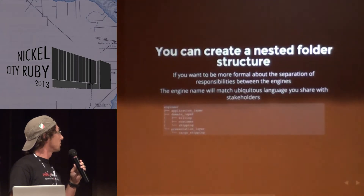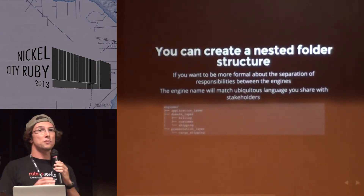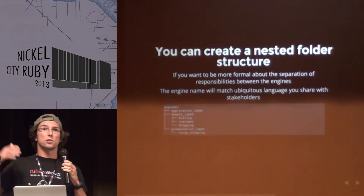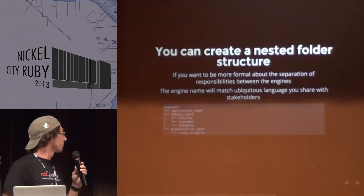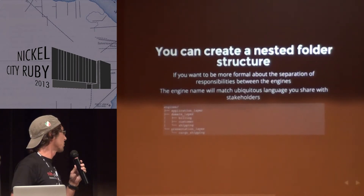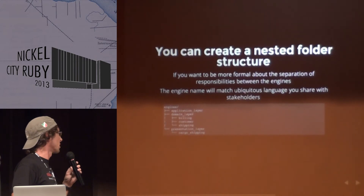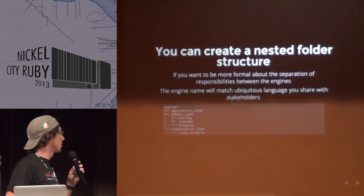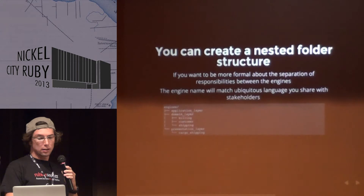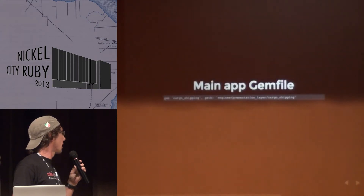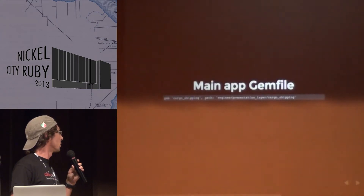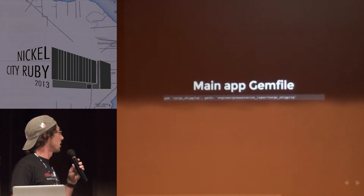You can create a nested folder structure for those engines, so the engine folder lives inside your Rails application's directory. If you want to be more formal about the separation, you can create an application layer, domain layer, and presentation layer. In this case, we're going to add to the main application's Gemfile a presentation layer gem — cargo shipping.